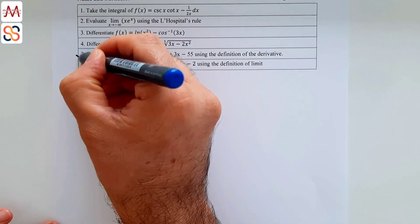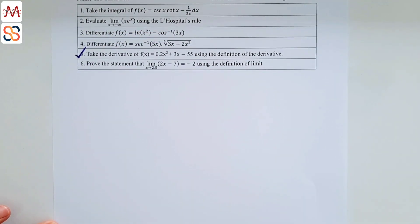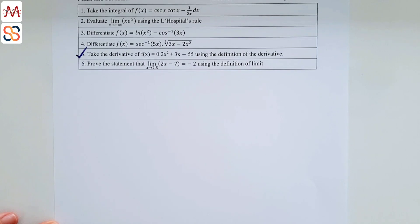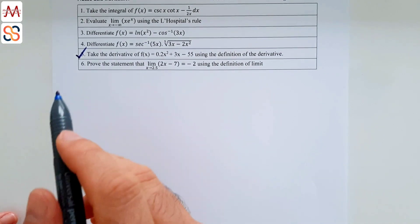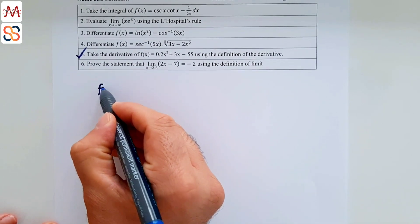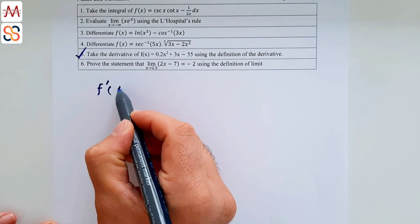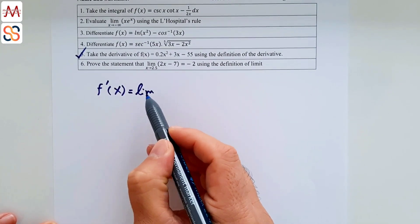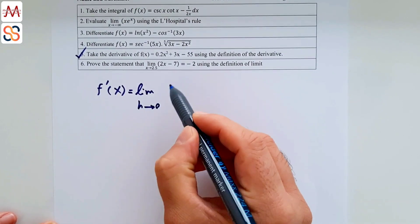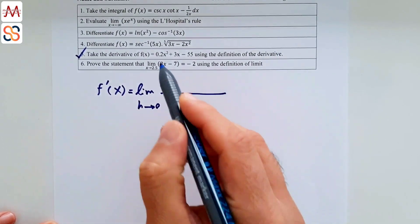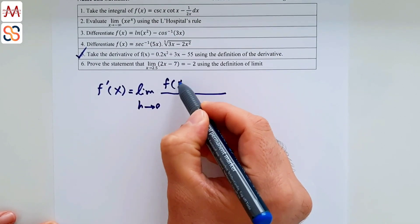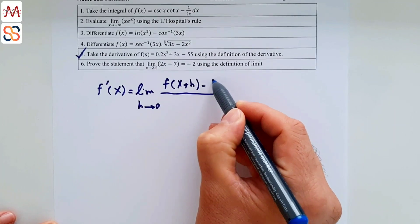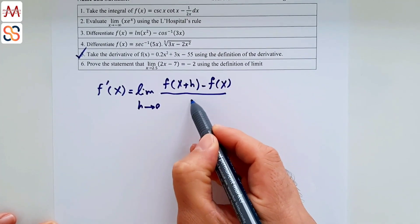Now solve question 5: take the derivative of f(x) = 0.2x² + 3x - 55 using the definition of the derivative. The definition states: f'(x) = lim(h→0) of [f(x+h) - f(x)] / h.